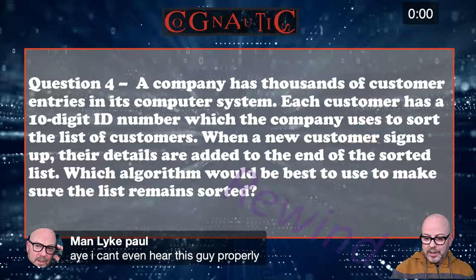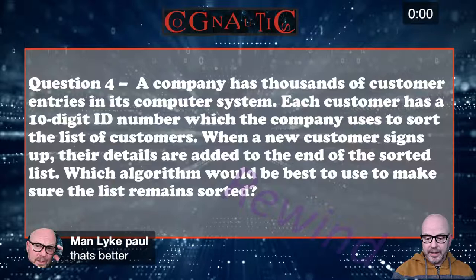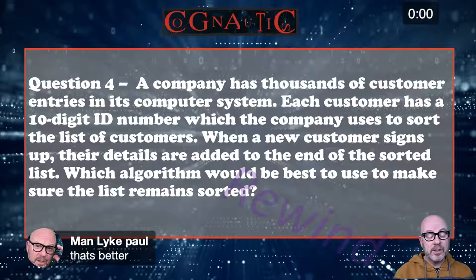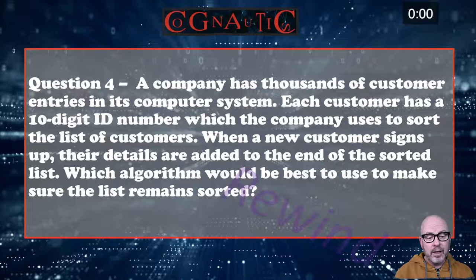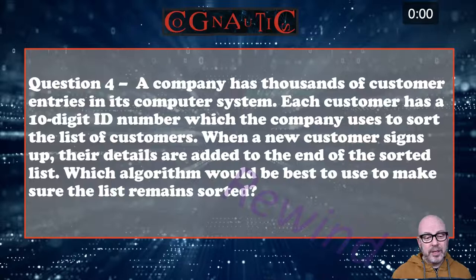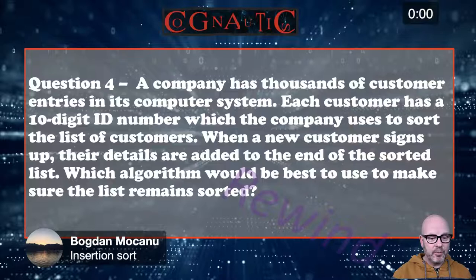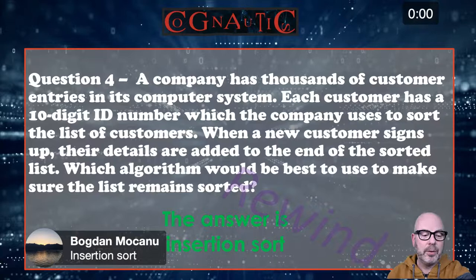A company has thousands of customer entries in its computer system. Each customer has a ten-digit ID number which the company uses to sort the list. When a new customer signs up, their details are added to the end of the sorted list. Which algorithm would you best use to make sure the list remains sorted? We've got 'insertion sort' from Aditya and Bogdan — and the answer is of course the insertion sort. Outstanding.